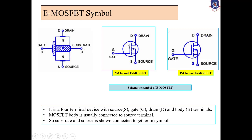This is the symbol of E-MOSFET. I have drawn here the symbol of N-channel E-MOSFET as well as P-channel E-MOSFET — the general construction and symbolic structure. There are three terminals: one drain, two gate, and third source. But the fourth terminal is also very important — it comes out from the substrate. It is also known as the body terminal.